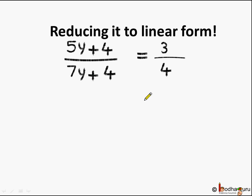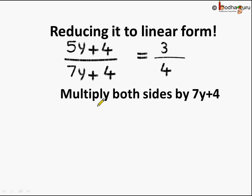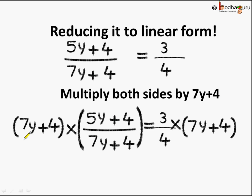Let's start to reduce it. We have 5y plus 4 divided by 7y plus 4 equal to 3 by 4. The first step is to ensure the expression on the LHS doesn't have y in the denominator. To do this, we multiply both sides by 7y plus 4. On the LHS, 7y plus 4 gets cancelled in both the numerator and the denominator.